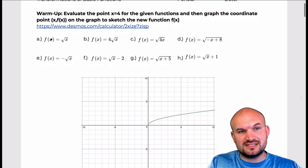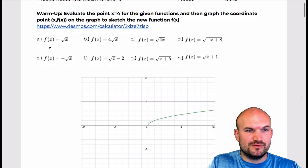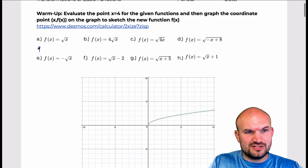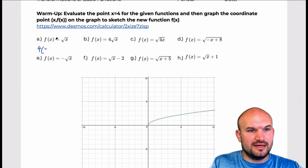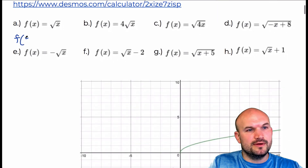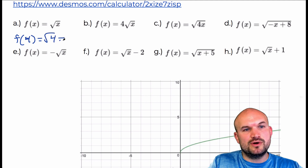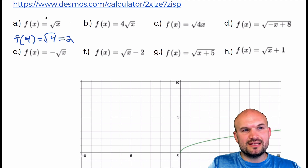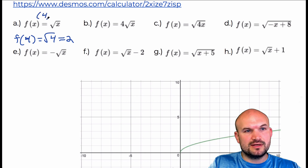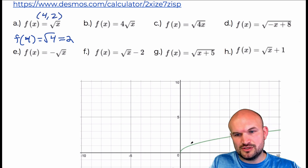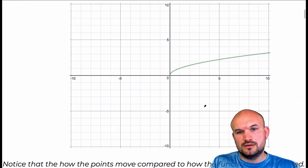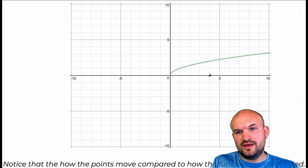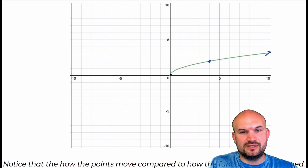In this first example we just have f(x) equals square root of x — I've already graphed that. But if I want to evaluate f(4), I'm going to plug in 4 for the x value. The square root of 4 equals 2. So the coordinate point we're going to plot is (4, 2). If I go over to 4 and up 2, you can see that that point is on the curve. That graph continues indefinitely and there's an endpoint right there.